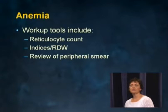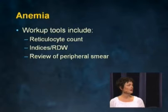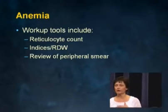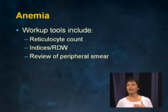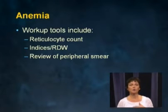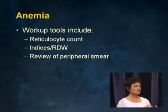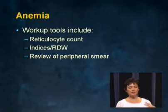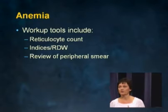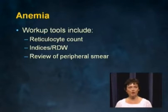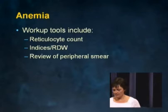When we work up an anemia, we use lots of different tools, but the primary ones are the reticulocyte count — which tells you if the marrow is capable of production — the indices and the RDW, which tell you whether you've got small cells with not much hemoglobin or larger cells with lots of hemoglobin, and then the peripheral smear, which gives you lots of clues as to what's causing the anemia.